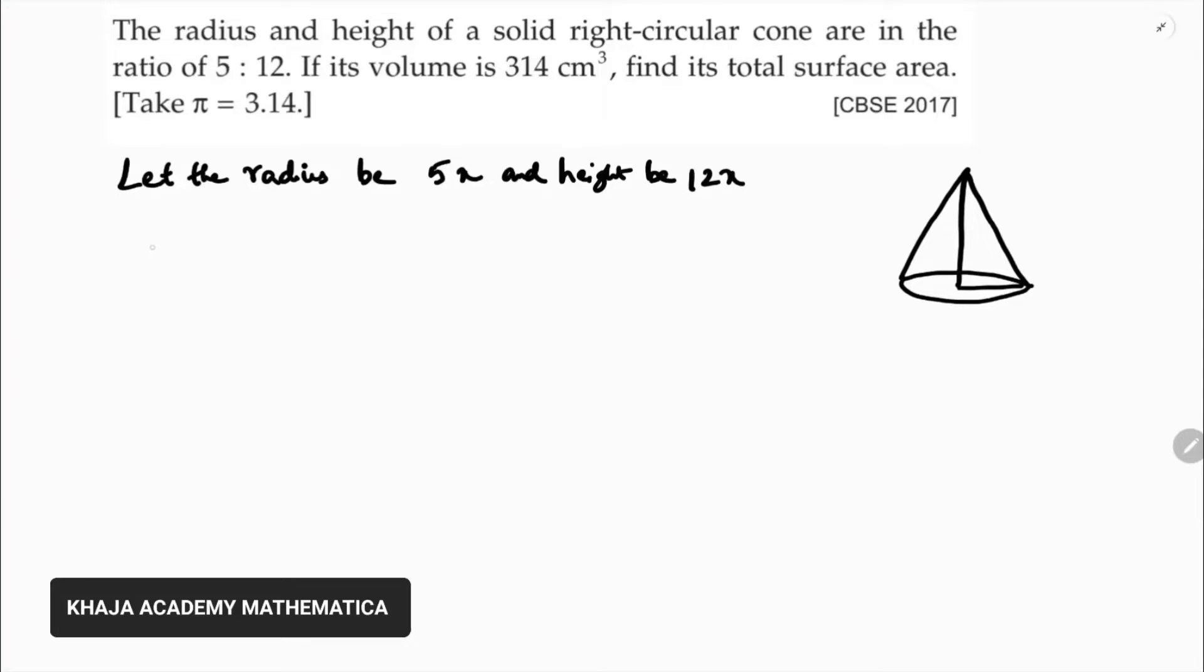They give volume. Volume of the cone is 314 centimeter cube. Volume of a cone formula is 1 by 3 pi r square h.